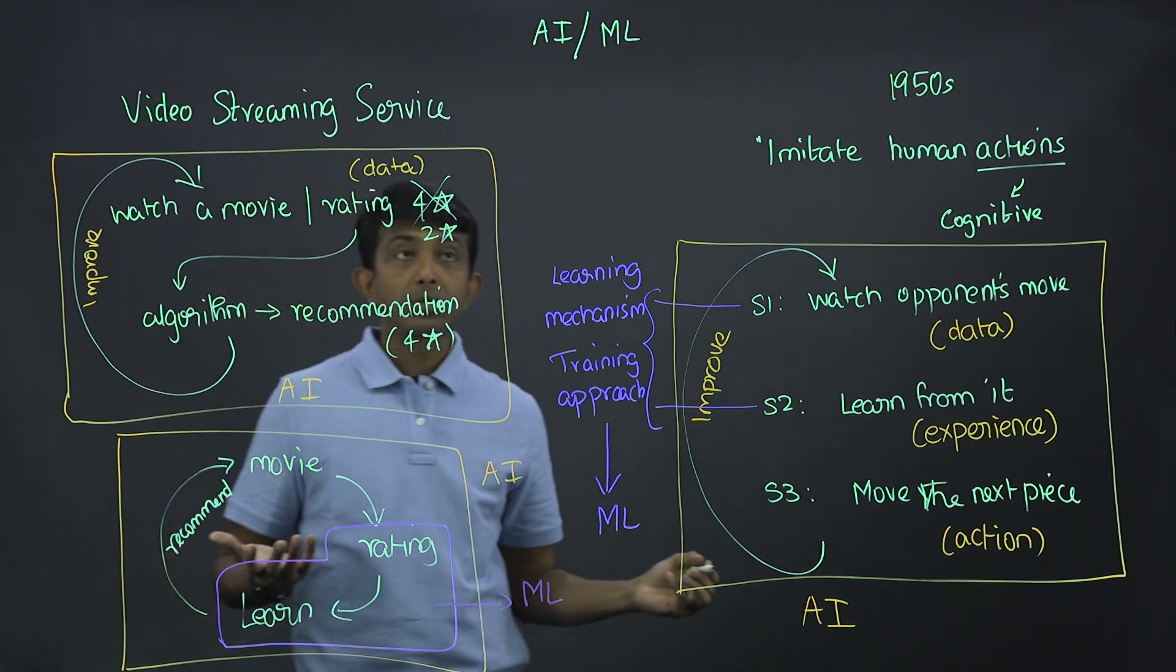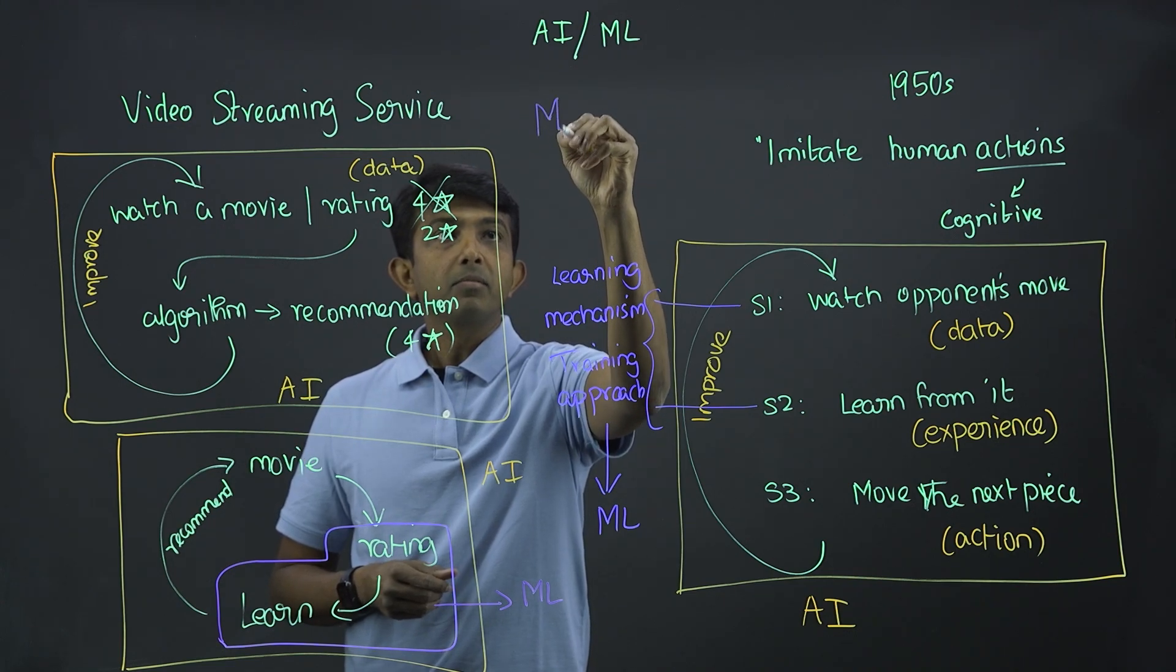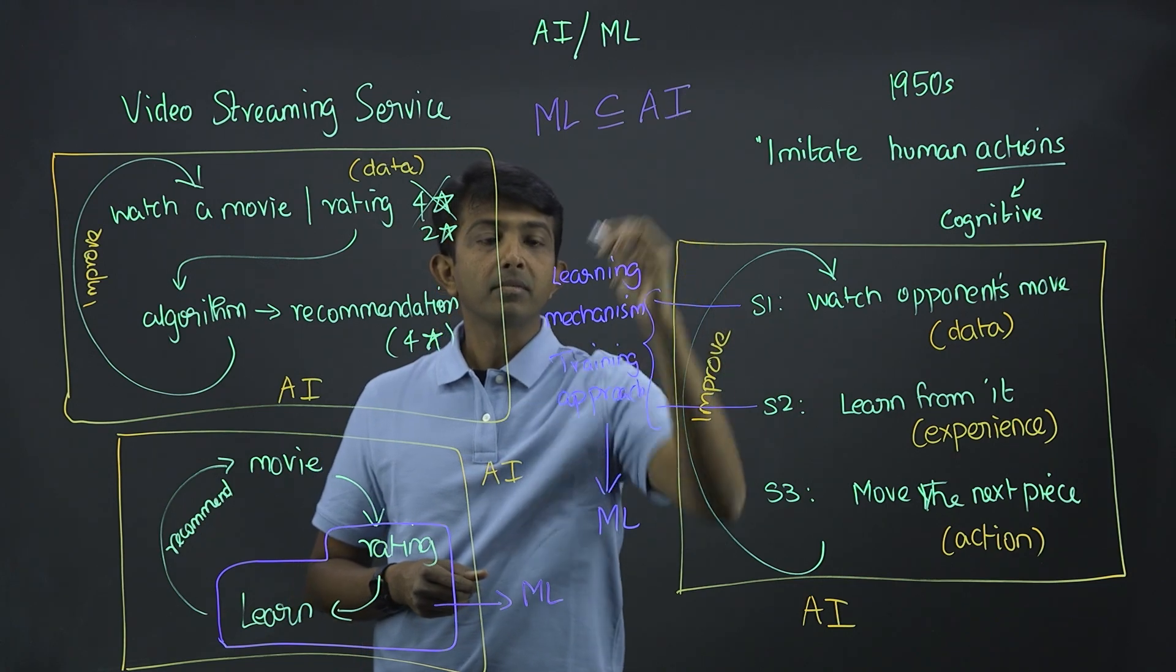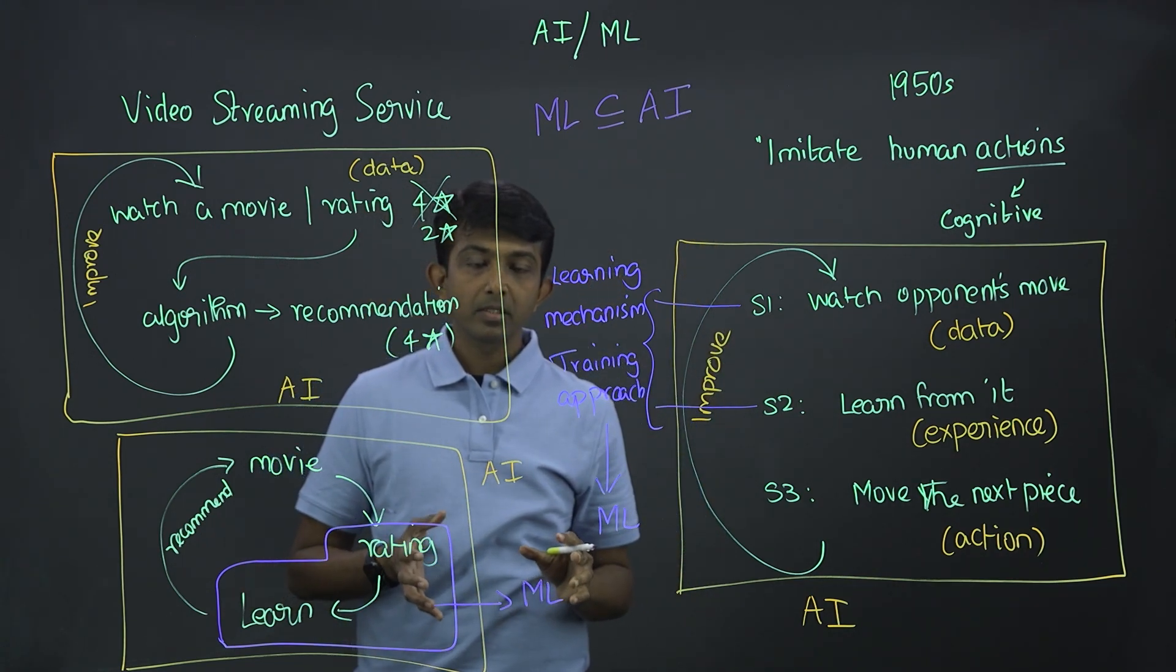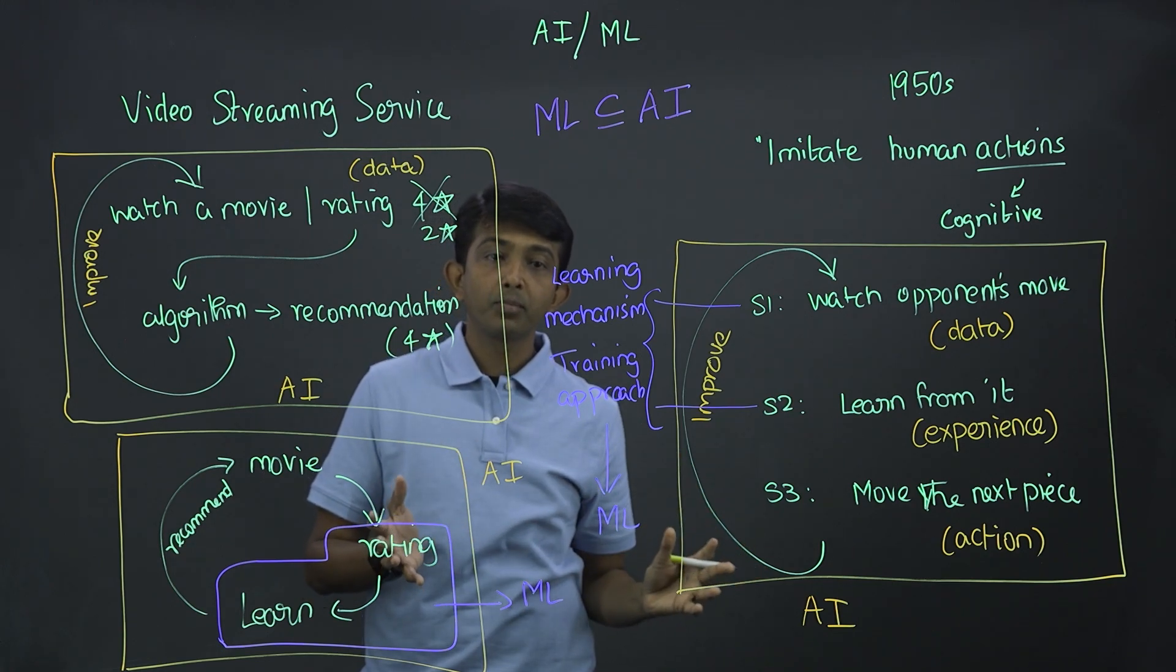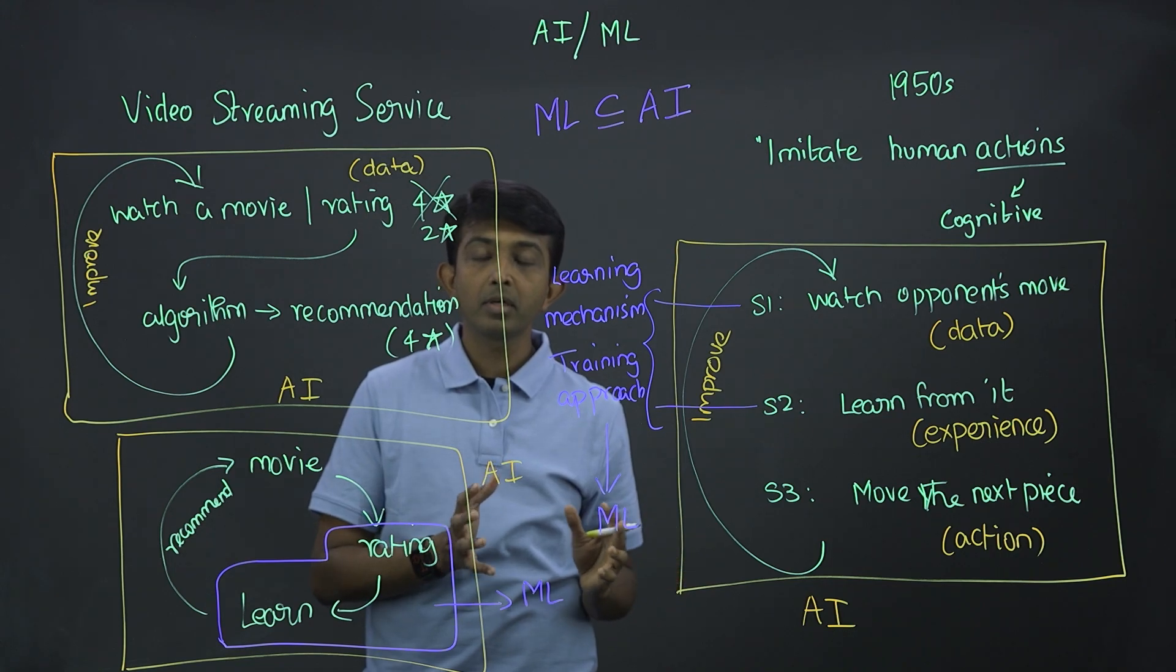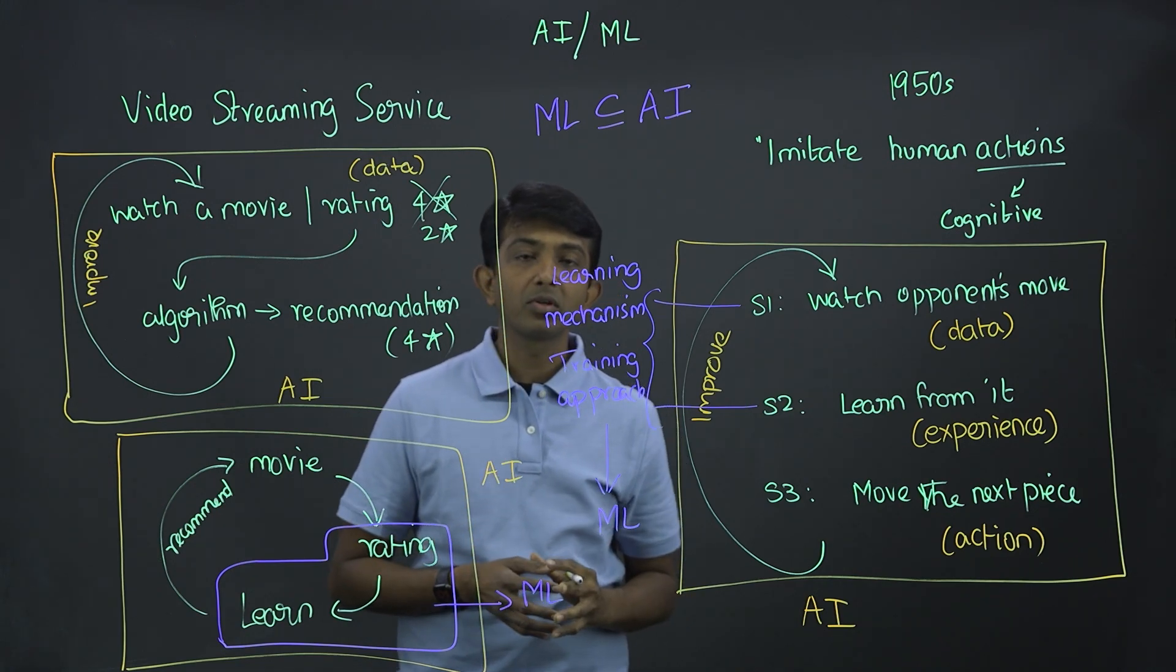So going back to our original question, AI and machine learning. So we can summarize that machine learning is nothing but it's a subset of an AI system. To clarify that a little bit more, the learning mechanism or the training approach that is present within an AI system, that's called machine learning. Now, there are different approaches that an AI system could use for the learning part, but anything that's algorithm-based training approach or learning mechanism, that's what is called machine learning.